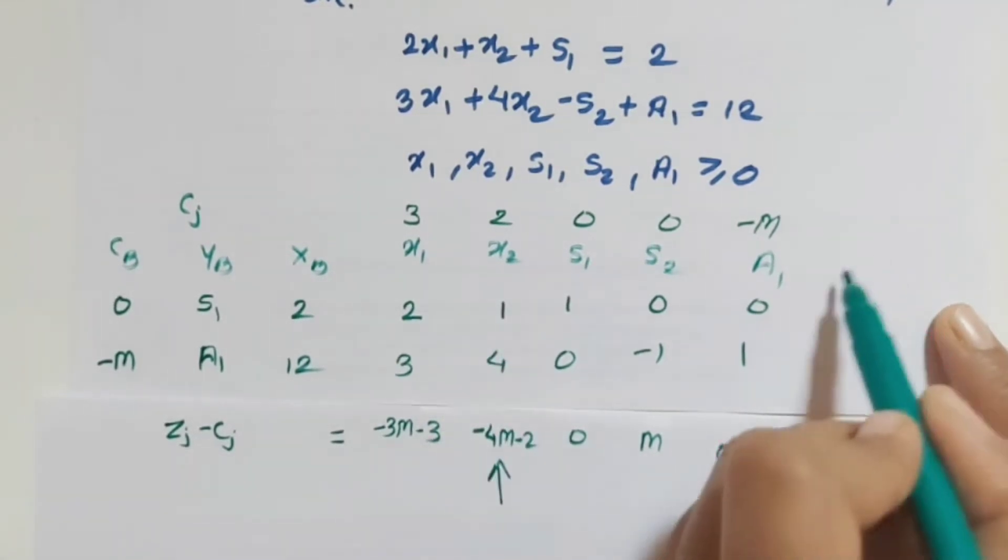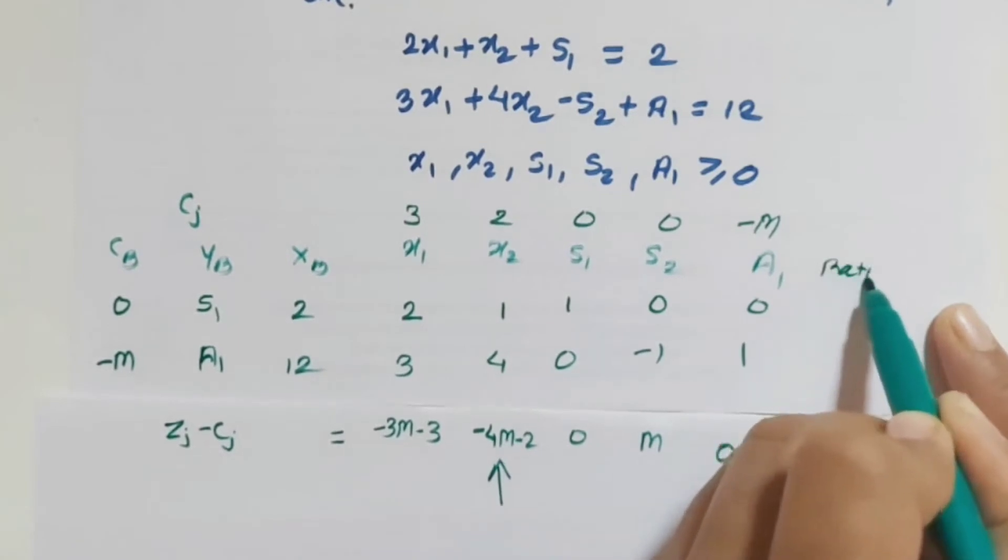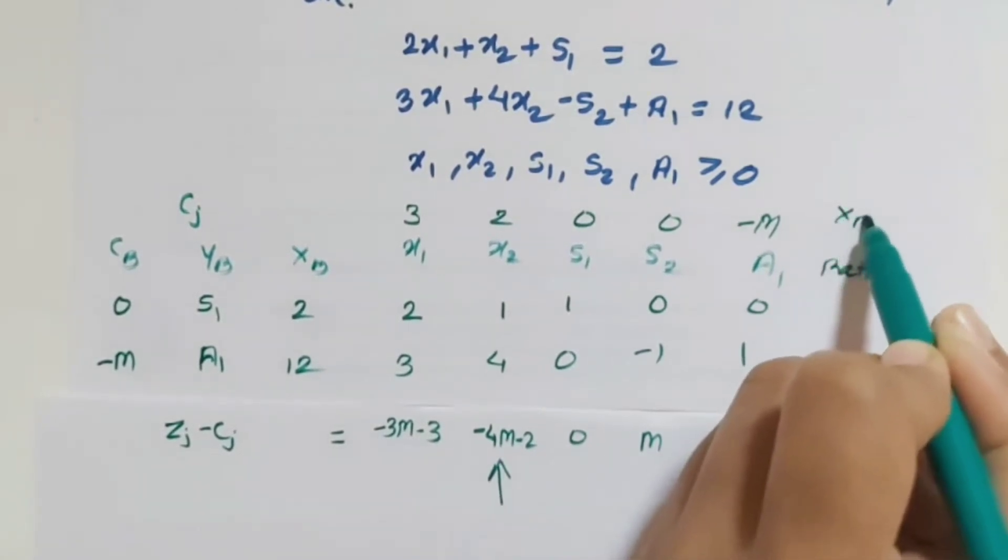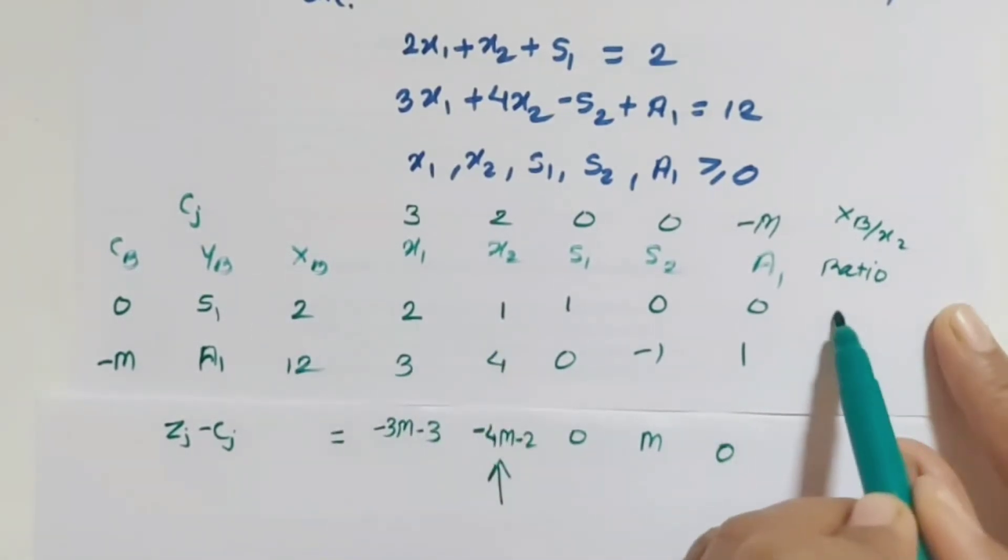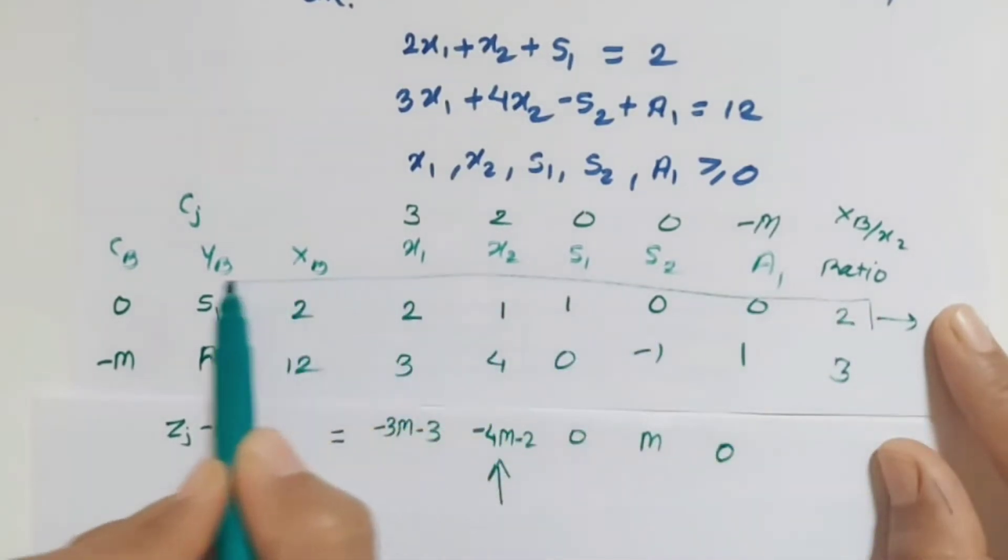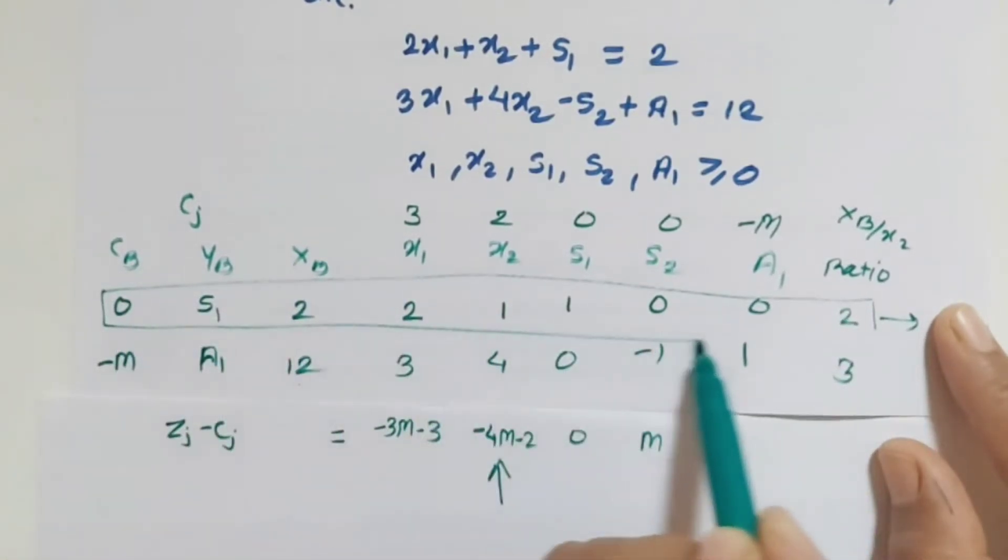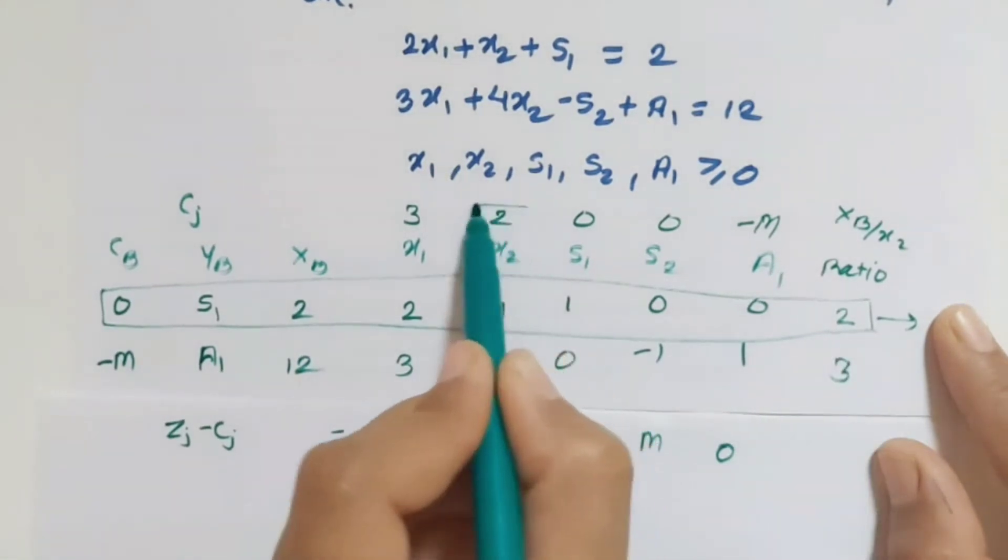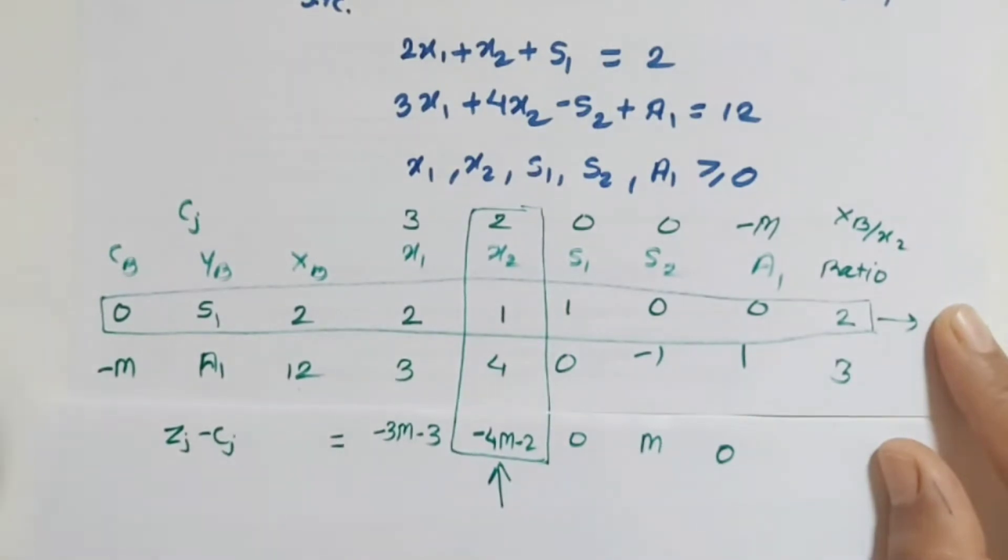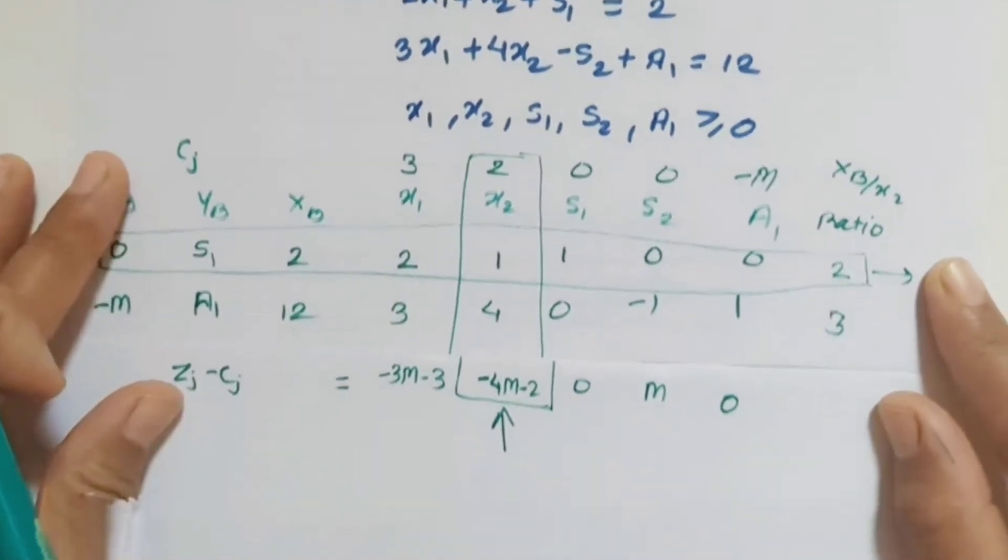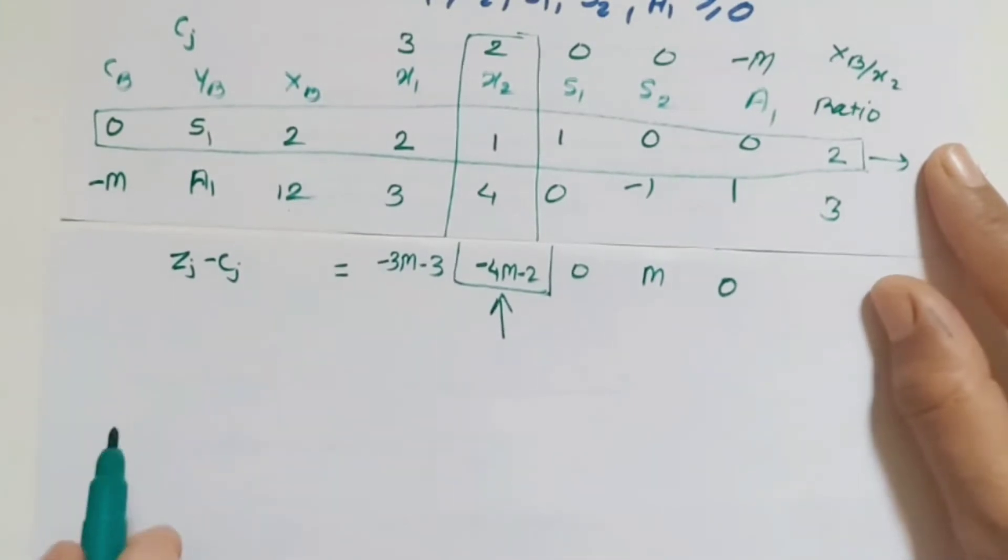Now here it is our incoming, so find out the ratio. Ratio is nothing but xb divided by incoming, so it is x2. Here first quantity is 2 divided by 1 is 2, 12 divided by 4 is 3. From this positive value, smallest is 2, so this is the corresponding outgoing. So s1 will be out, and instead of s1 we have to write x2. This is our incoming vector. Now from this table we have to make another second table.